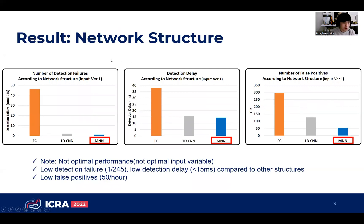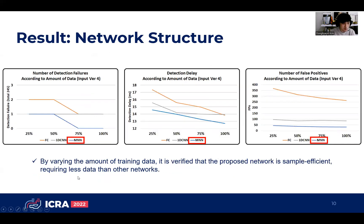The proposed network structure shows low detection failure and low detection delay compared to other structures. Also, it shows low false positives. By varying the amount of training data, it is verified that the proposed network is sample-efficient, requiring less data than other networks.